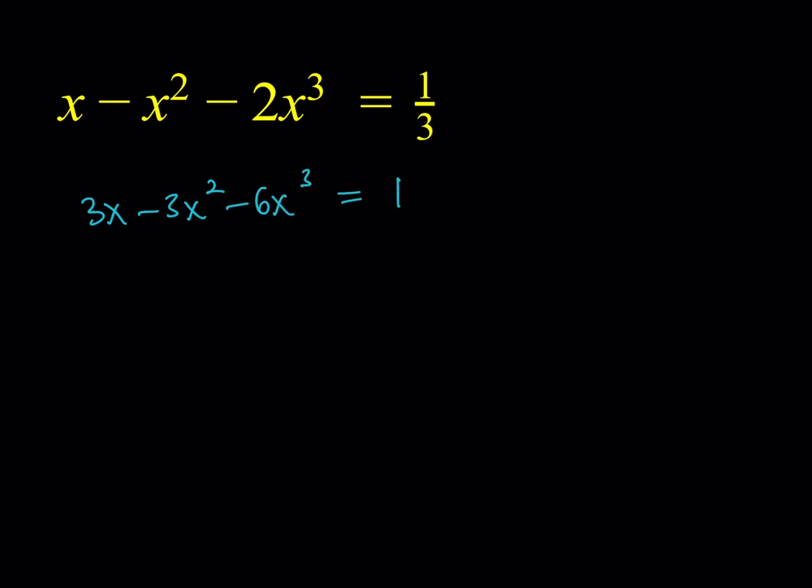Great. Now I can put everything on the same side. So it's going to look like this: 6x cubed plus 3x squared minus 3x plus 1 is equal to 0.